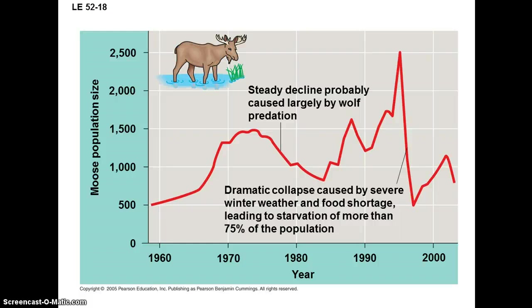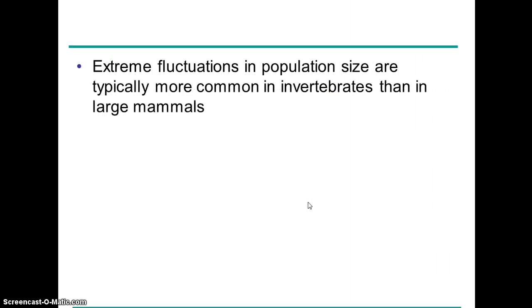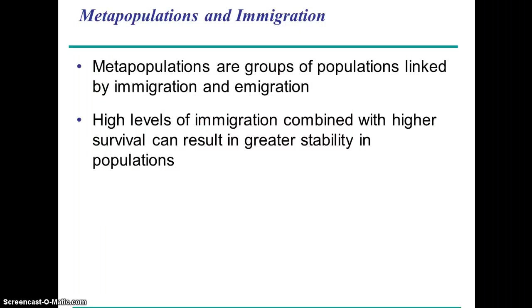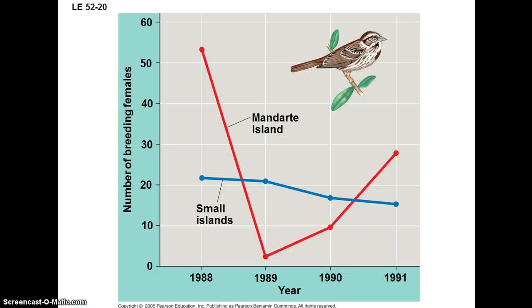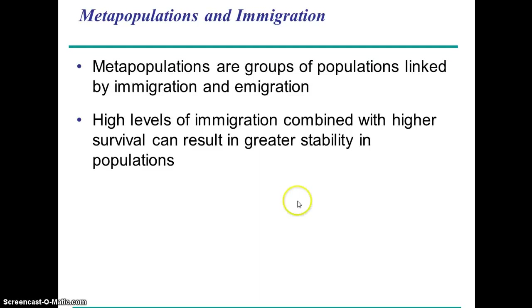Populations can jump around quite a bit depending on the surrounding conditions. Immigration can also play a role. When we talk about a metapopulation, we're talking about populations within a larger population. You can have situations where perhaps one of those subpopulations has high birth rates and those individuals immigrate out and add to the surrounding populations, and in essence maybe even subsidize those surrounding populations.